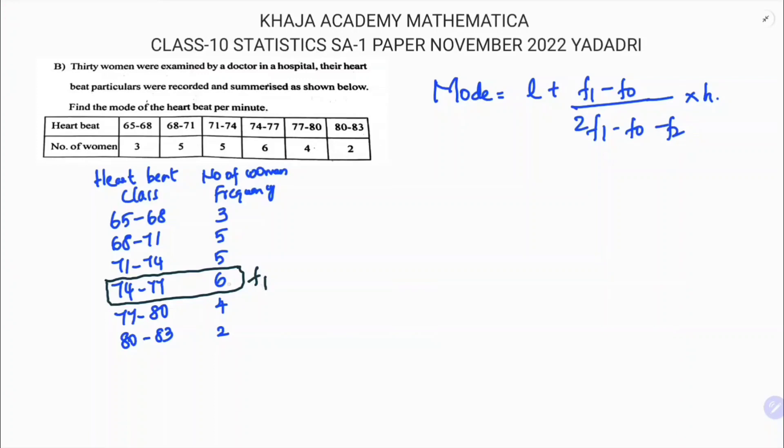Six is the frequency of the modal class, that is f1. Above that we write f0, below that f2, so they come in order: f0, f1, f2. As it is a modal class, the lower boundary is 74, since it is continuous class. So now we have all the values.